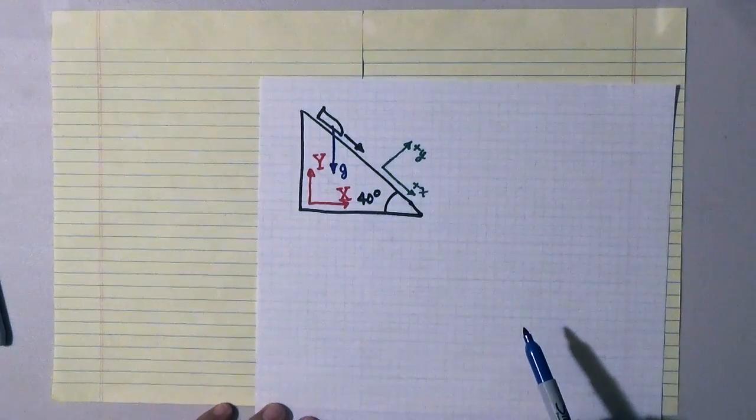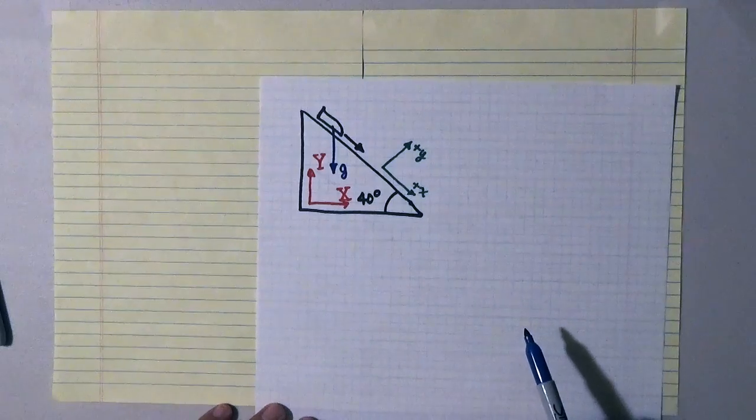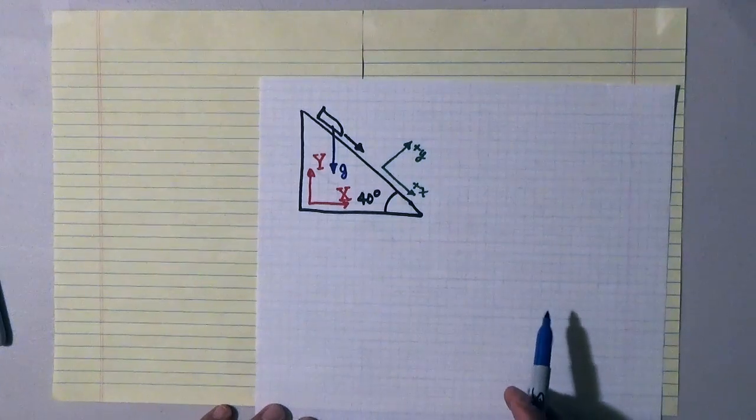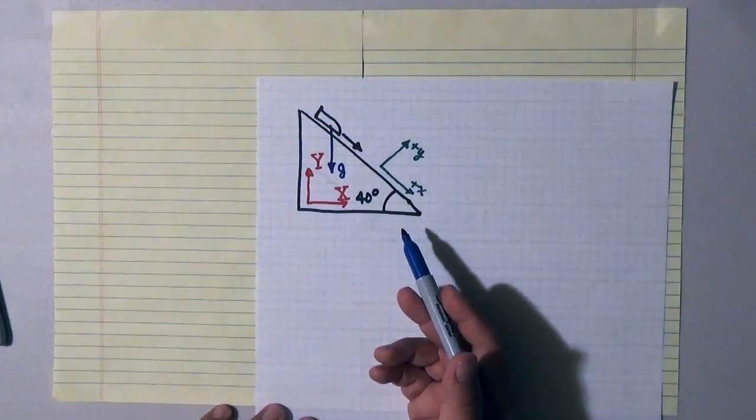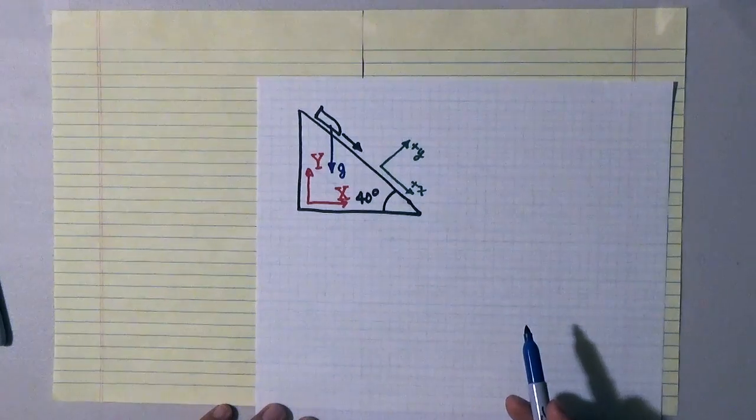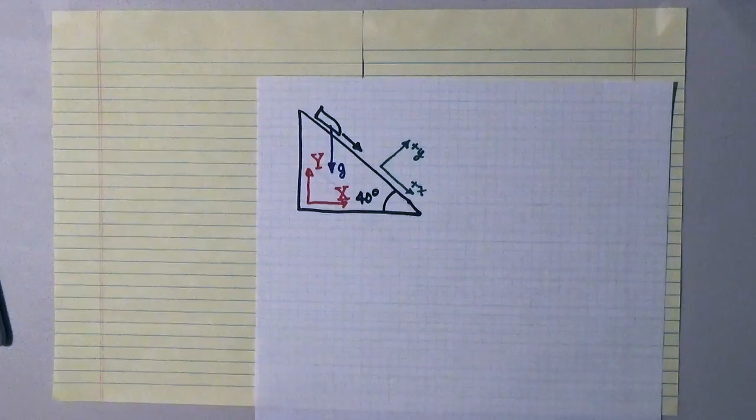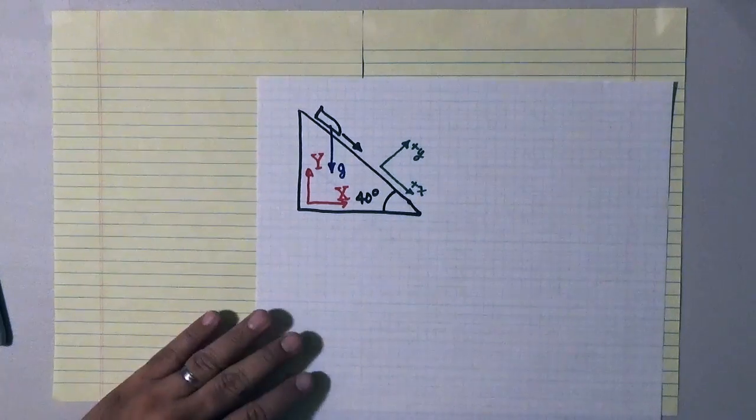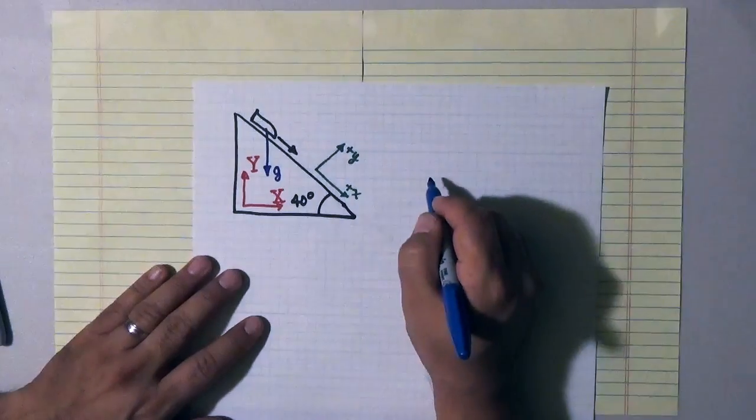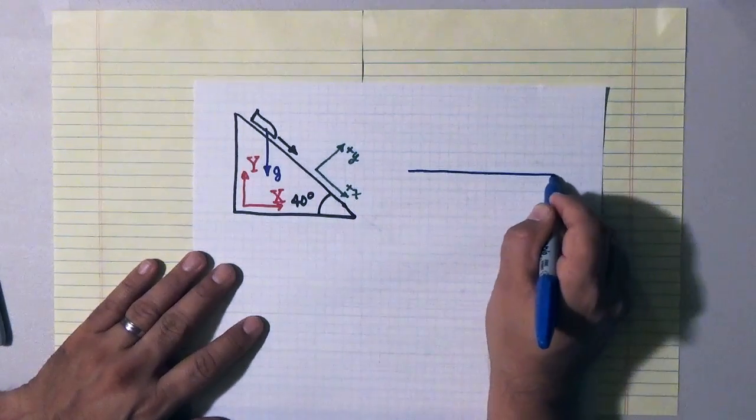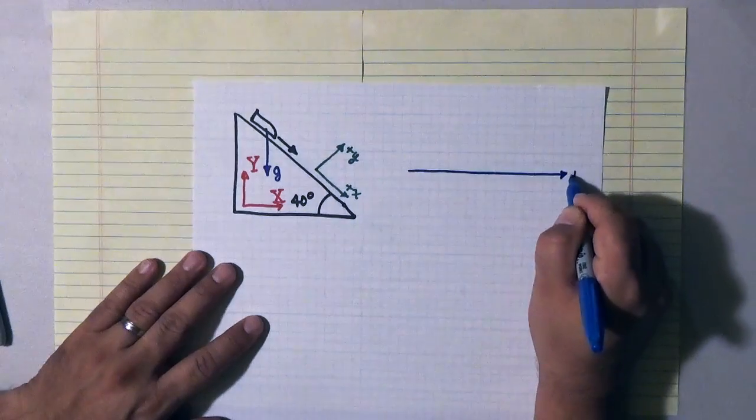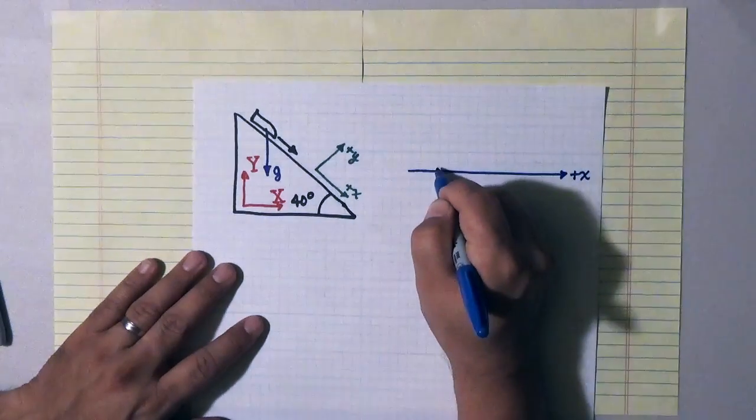Now when you just stare at a picture like this it probably hurts your head a little bit to think about it because your coordinates are tipped and this vector is pointing. How am I going to actually decompose this into this coordinate system? Well what I like to do is I like to draw a second picture. So over here I'm going to draw a picture that is aligned with my plus x coordinate system.